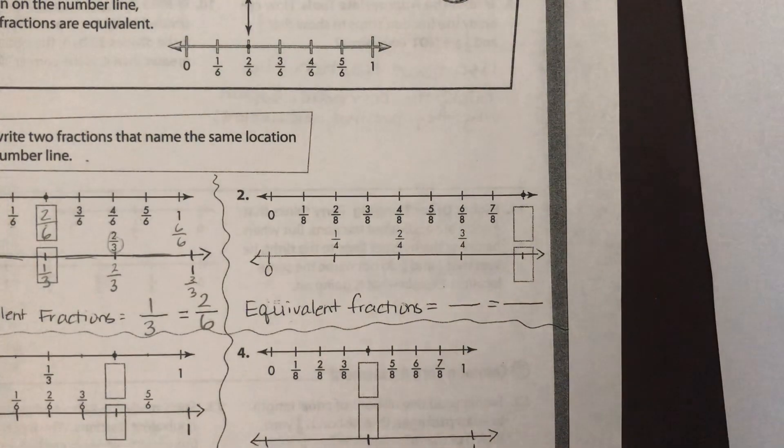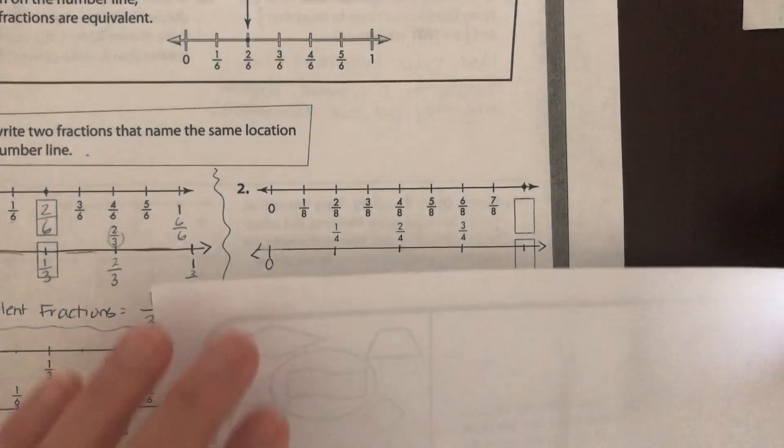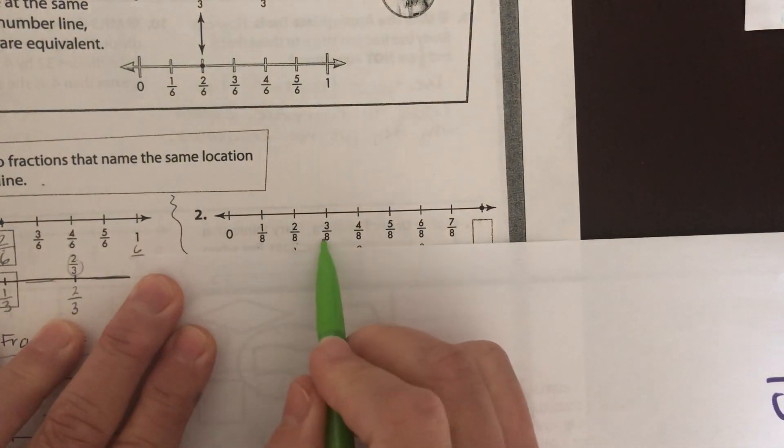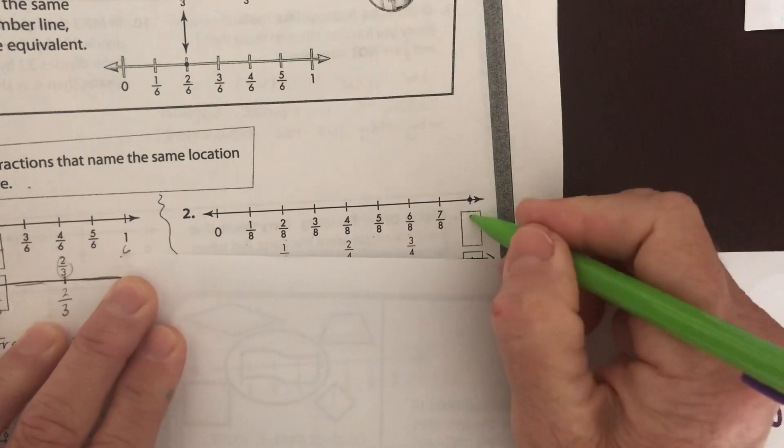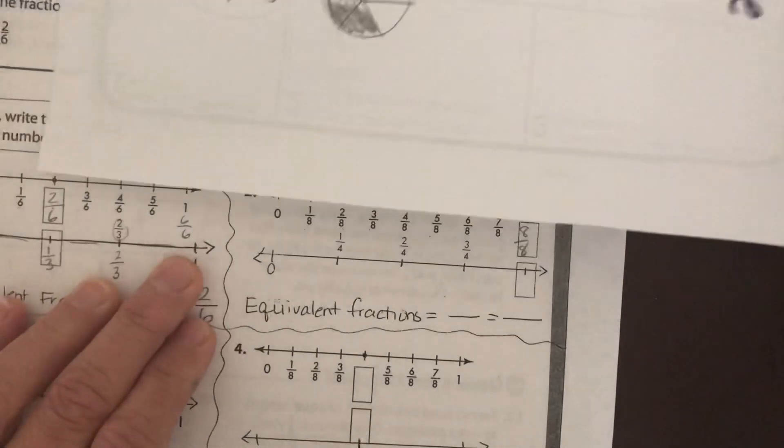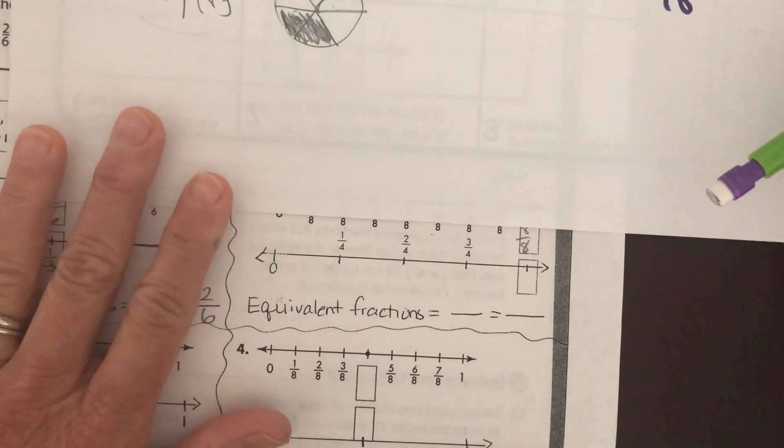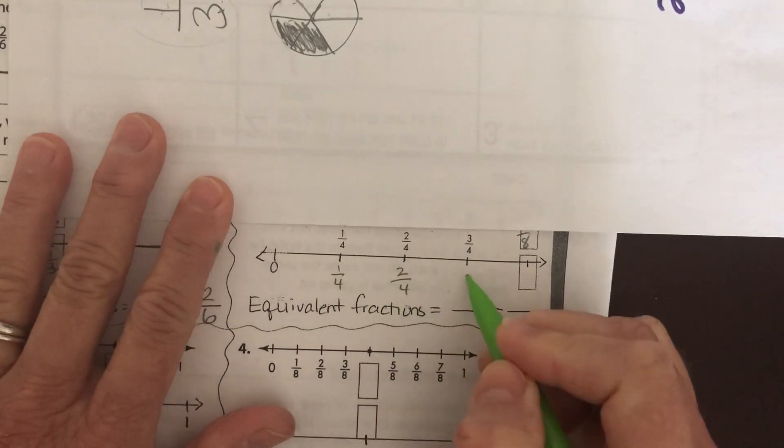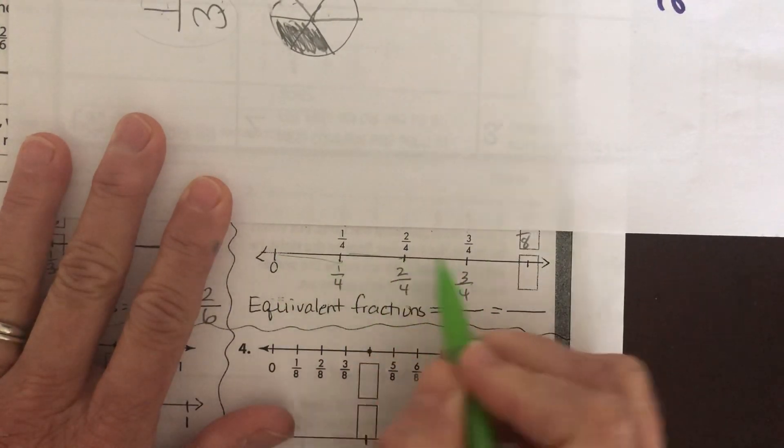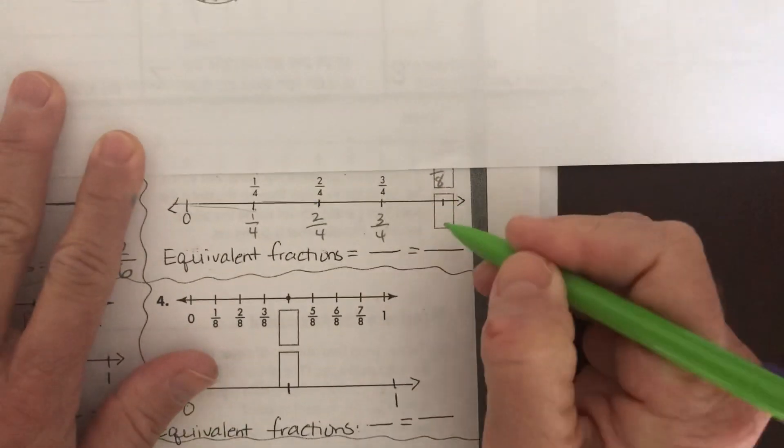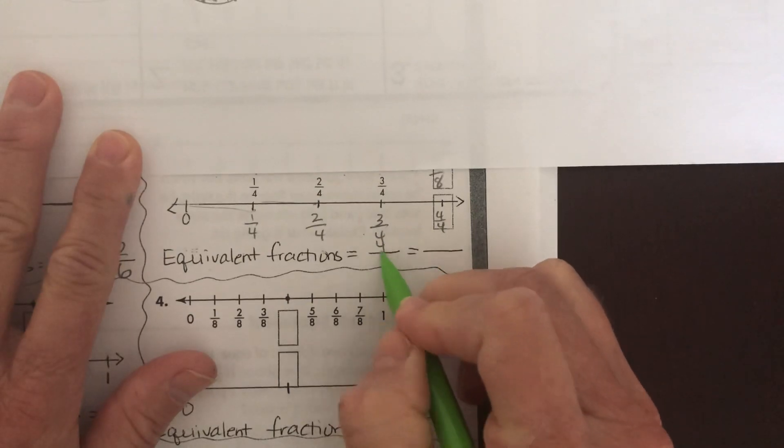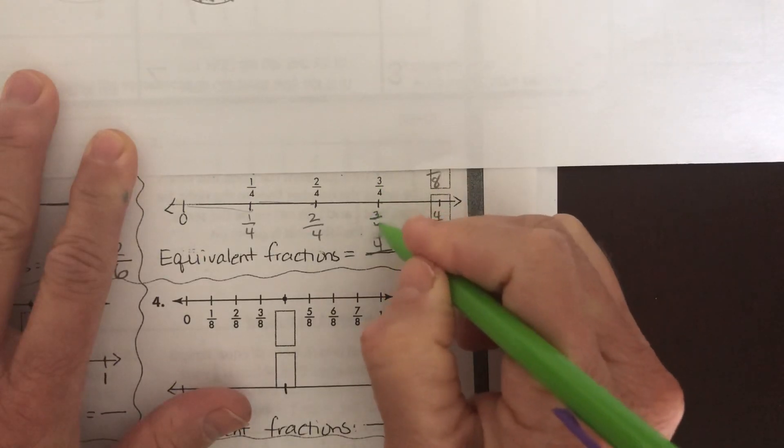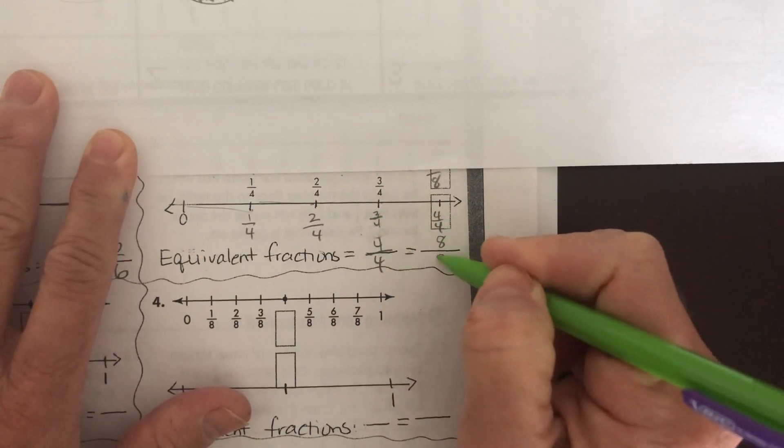So for number 2, we're going to ignore the bottom part and just look at this top fraction here. What number is missing? 1-8, 2-8, 3-8, 4-8, 5-8, 6-8, 7-8. This is one whole right here. So it'll be 8-8. Okay, now look at the bottom. They're writing the fractions above, you can see. I would be, it would be smarter to write them below. So 1-4, 2-4, 3-4, what was this one must be? Over here. 4-4.